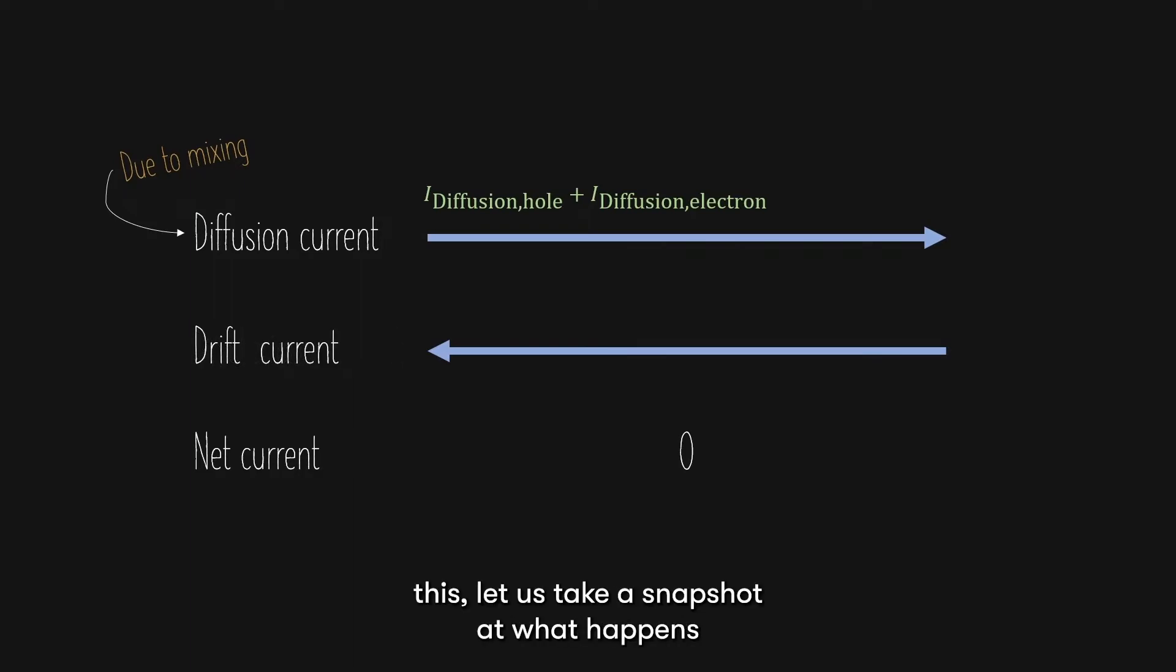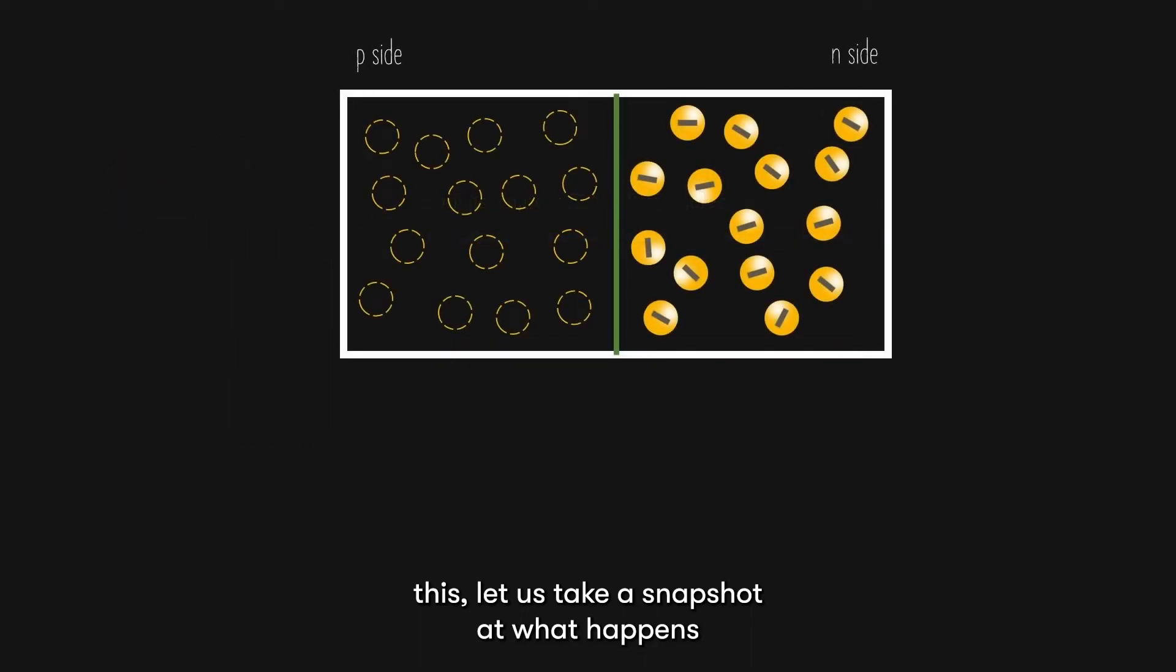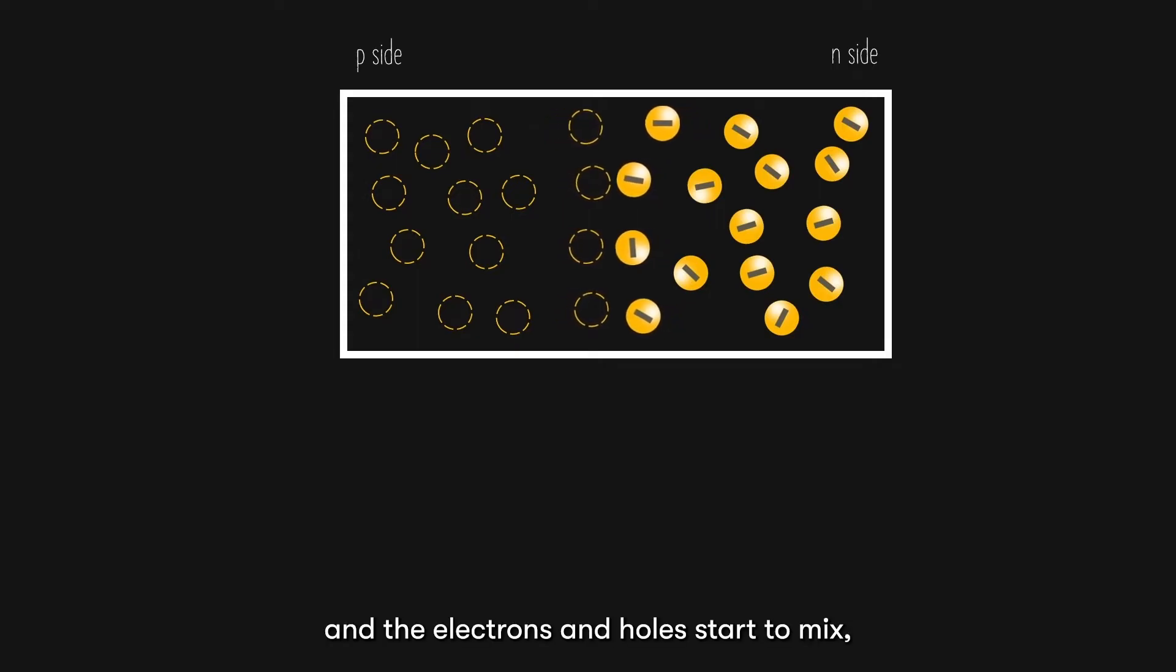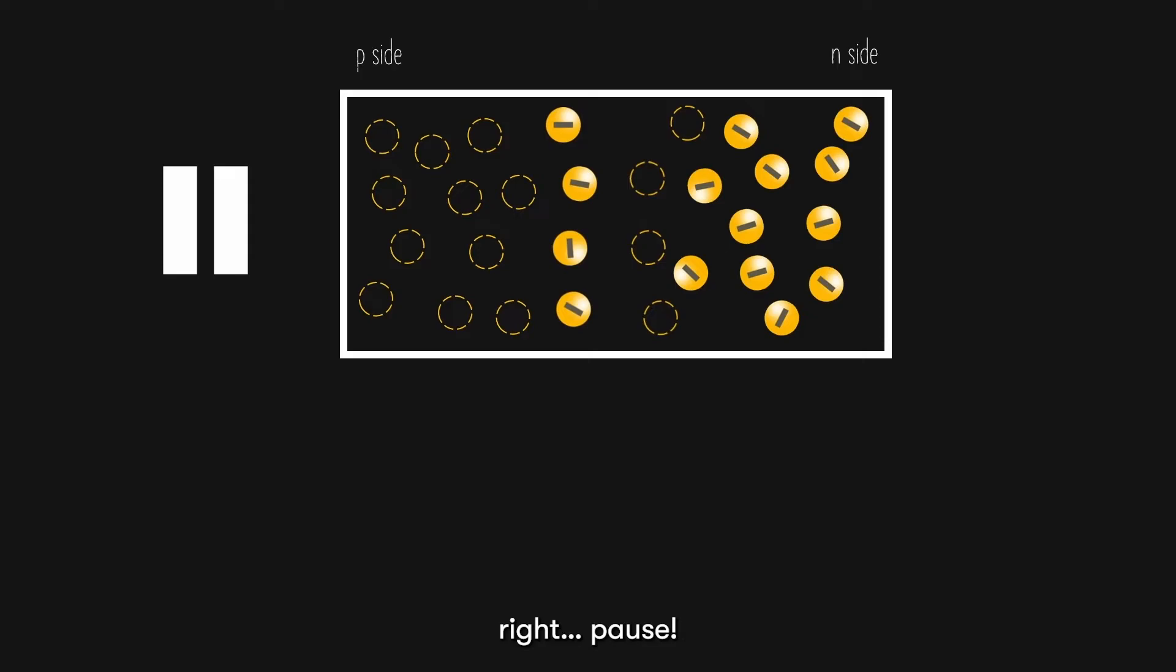To understand this, let us take a snapshot at what happens very early before the electrons and holes fully mix. So now, I start by removing the divider, and the electrons and holes start to mix, right? Pause! At this particular instant, I would have a bit of holes on the n-side near the junction, and a bit of electrons at the p-side near the junction.